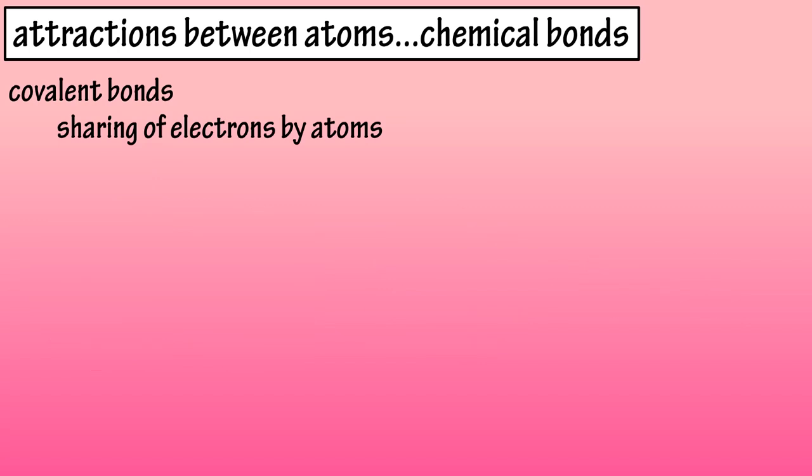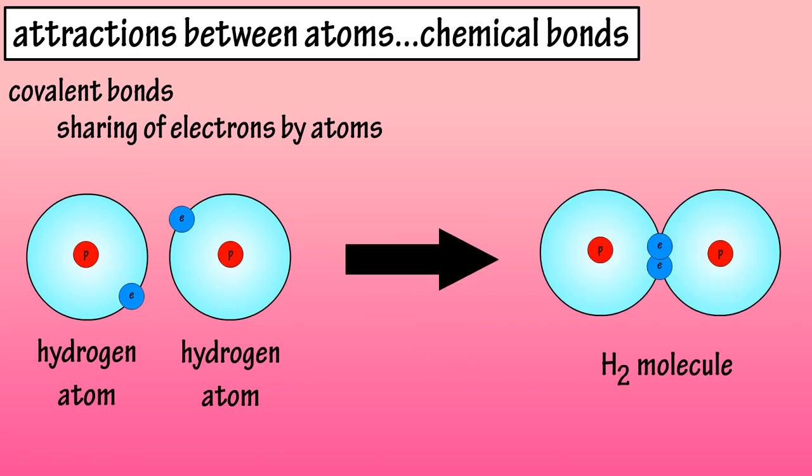So, for instance, two hydrogen atoms can bond by sharing a pair of electrons. Hydrogen is one of the exceptions to the octet rule of having eight electrons in the outer shell because it only has one shell.